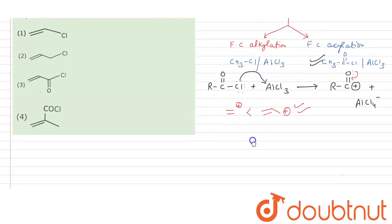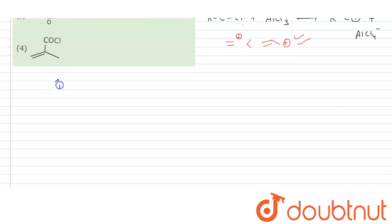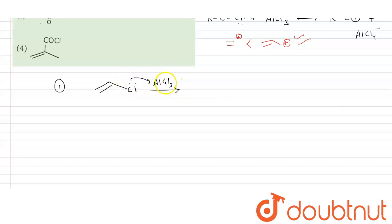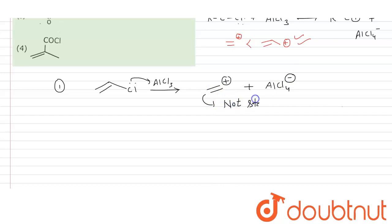Option A is vinyl chloride. When vinyl chloride reacts with AlCl3, there is formation of a vinyl cation and AlCl4⁻. This vinyl cation is very unstable — it will not form readily. Therefore, the Friedel-Crafts reaction of vinyl chloride does not proceed.